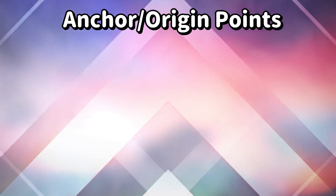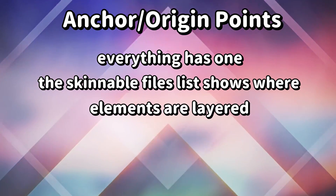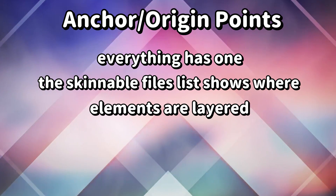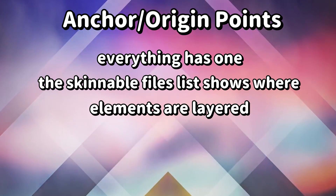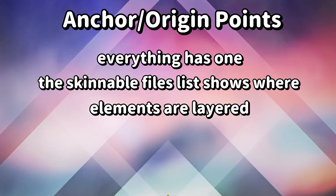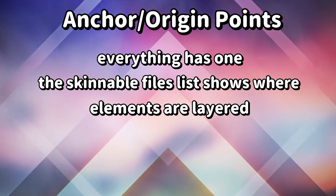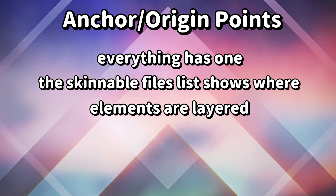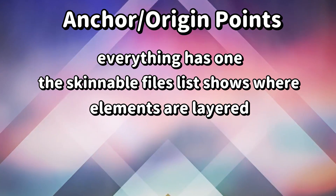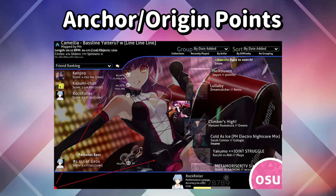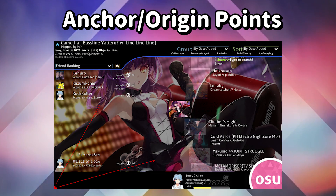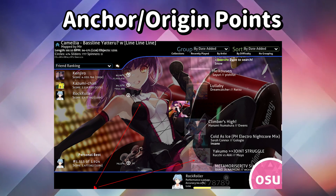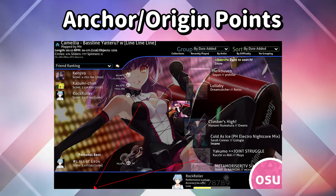All images have anchor points, as stated in the skinnable files list. Every image, text, and in-game element will be on its own layer — remember this later because you will need to understand how it works. Anchor points listed in the spreadsheet tell you how they will be spread, but you will also need to consider where the image is placed in the client. Here are three examples of anchor points.